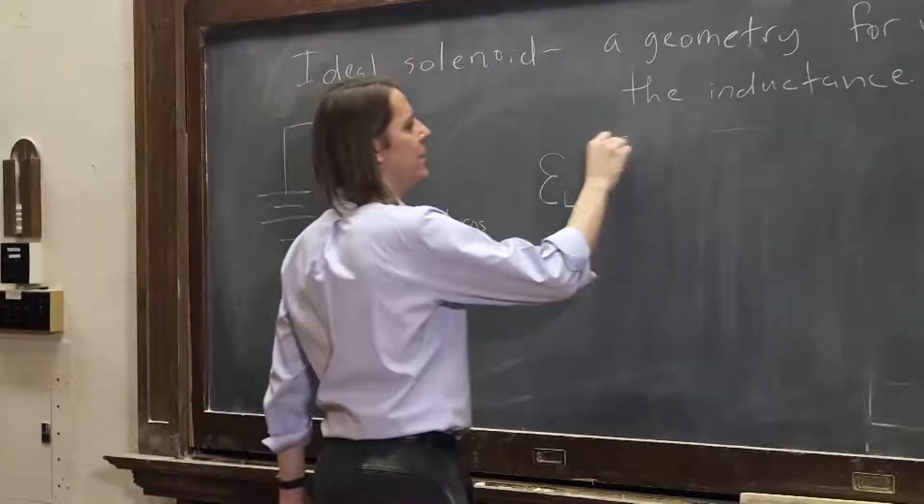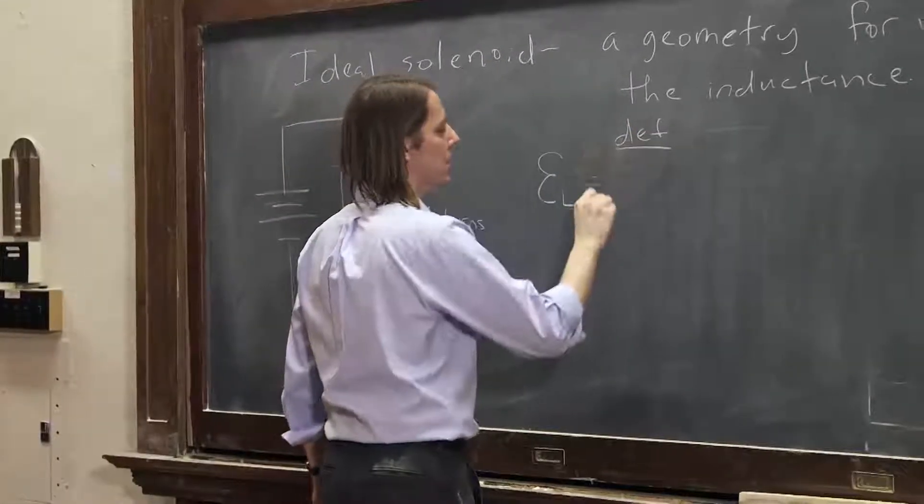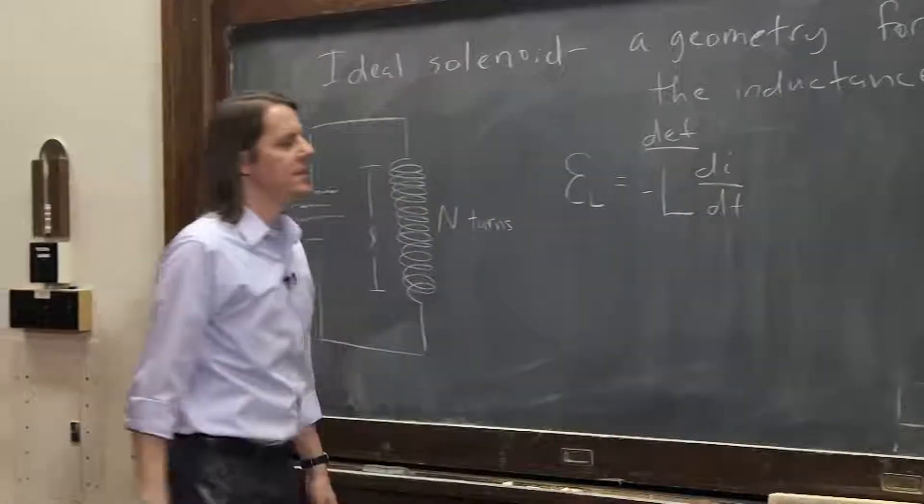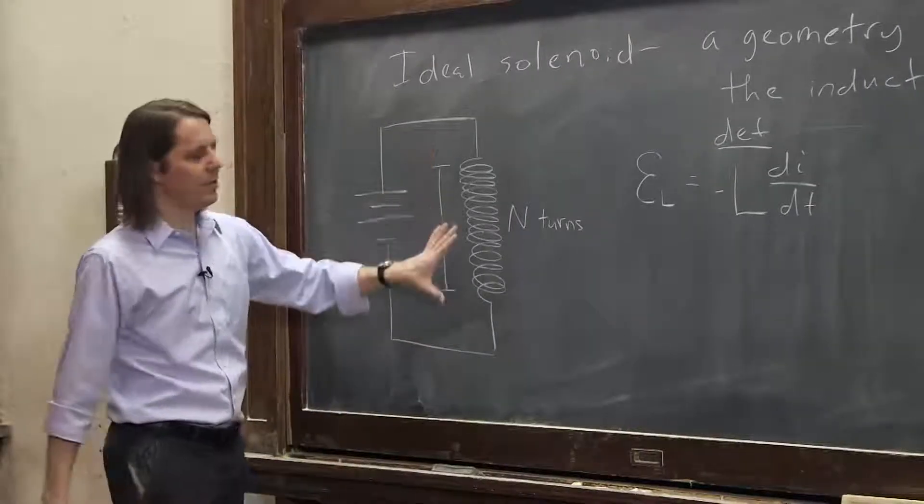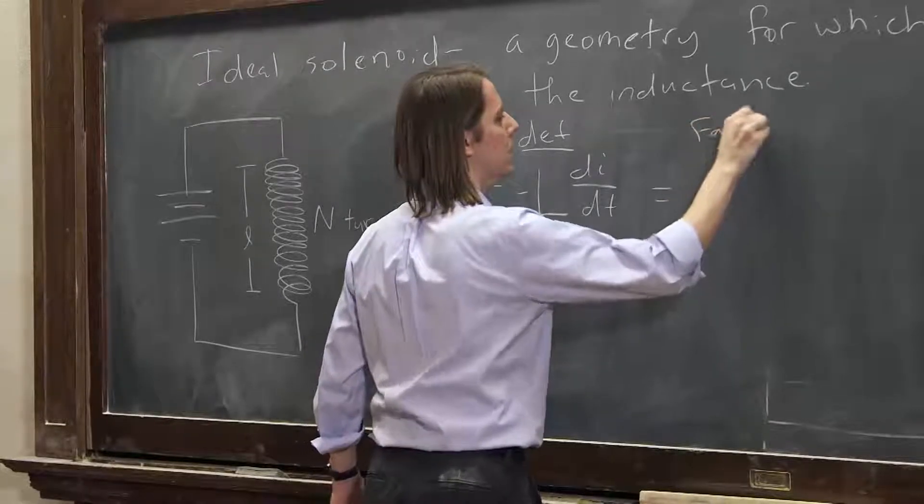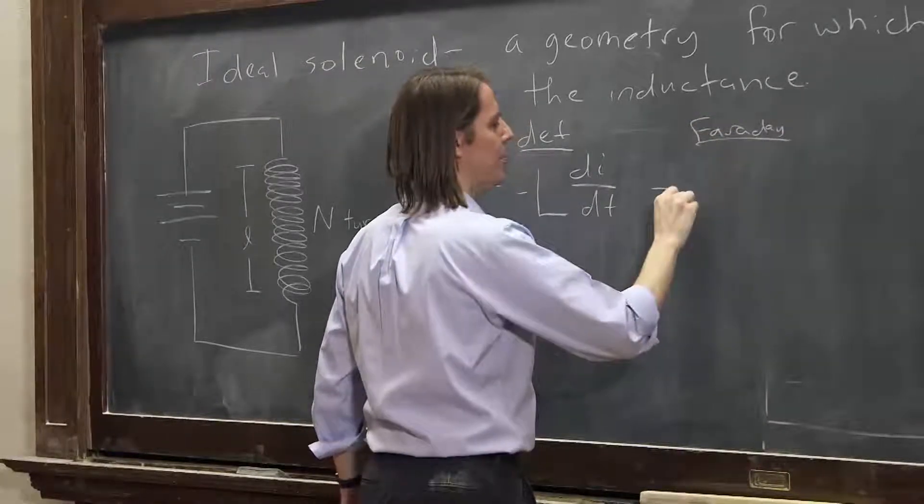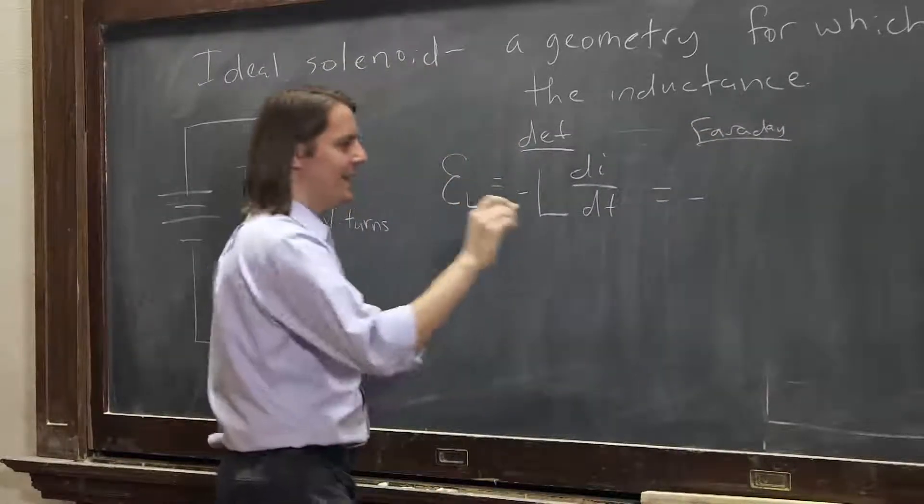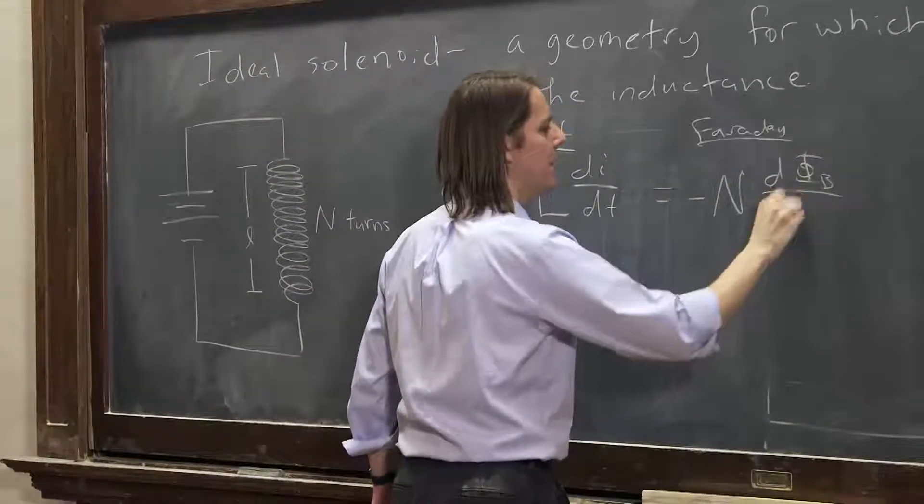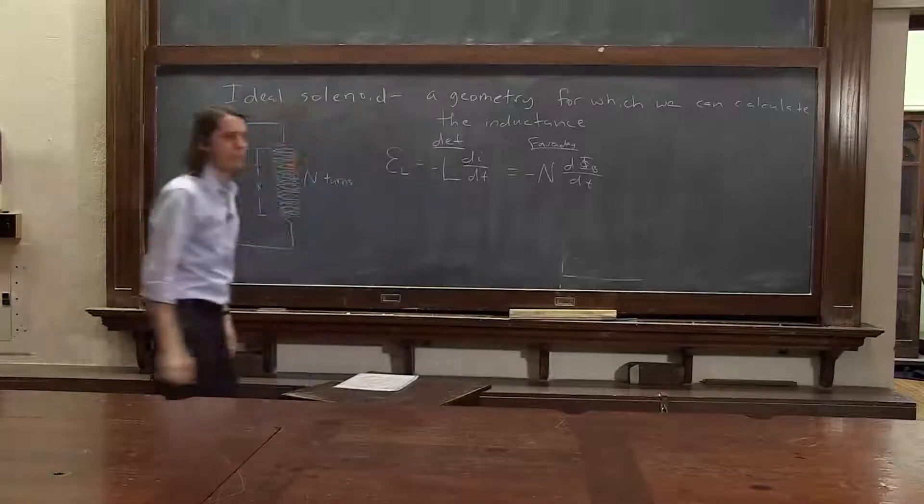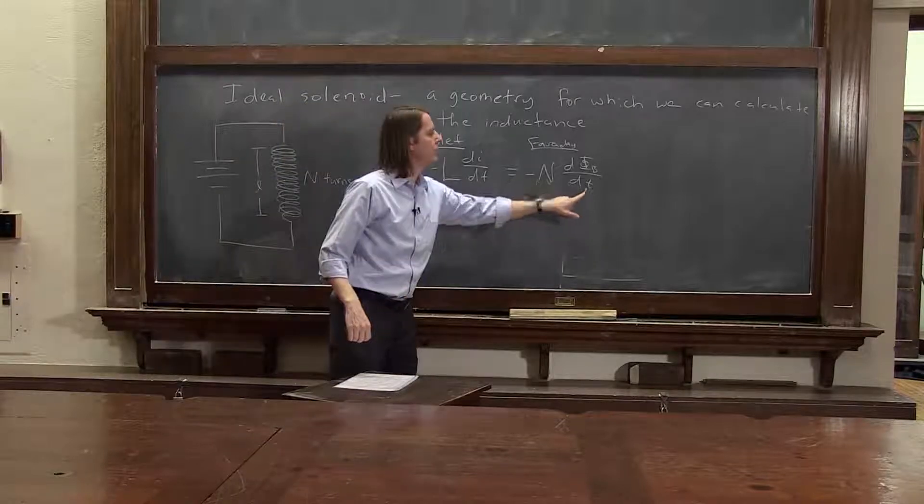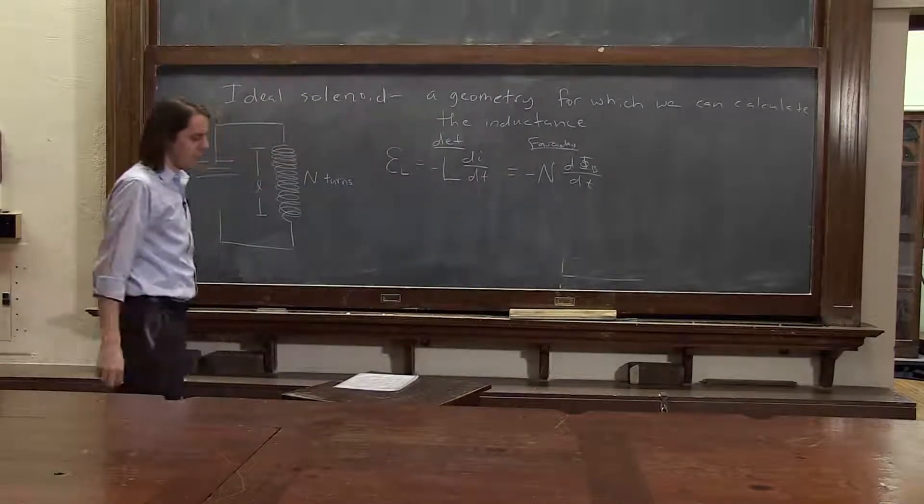So we have our definition, which means it's minus L di dt. But since this is a well-defined geometry, we also can do it from Faraday's law, where it's minus n, total number of turns, d phi b dt. Both of those are true. This one's treating it as just an unknown circuit element. This one is treating it with Faraday's law of induction.